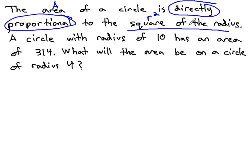The square of the radius, meaning we have to square that variable in our formula. A divided by r squared, direct means we divide to equal our constant. From here, everything else can work the same as we've always seen.